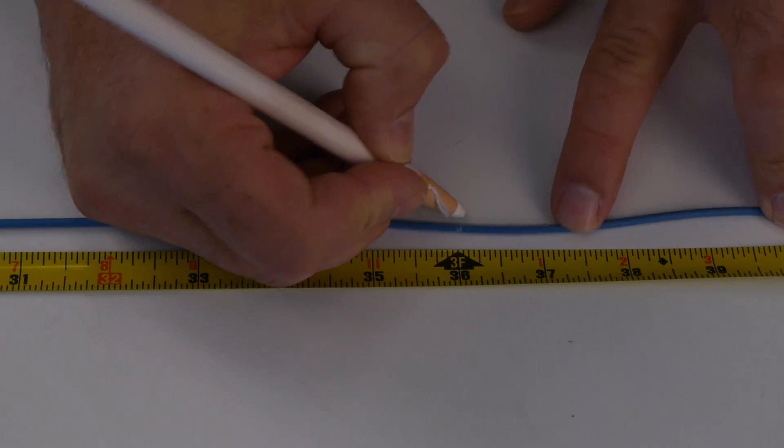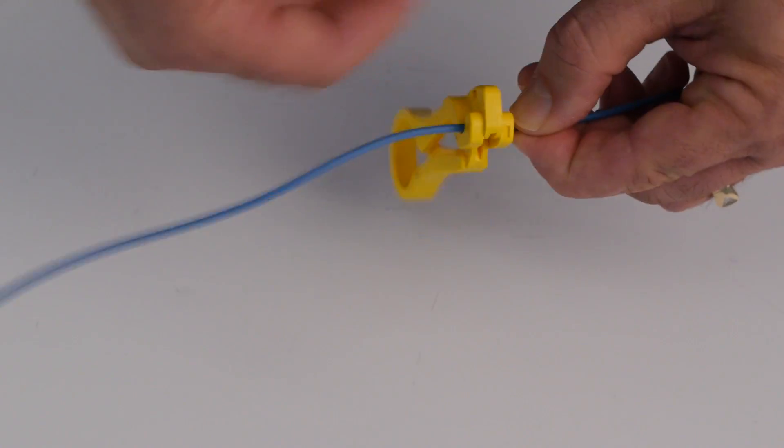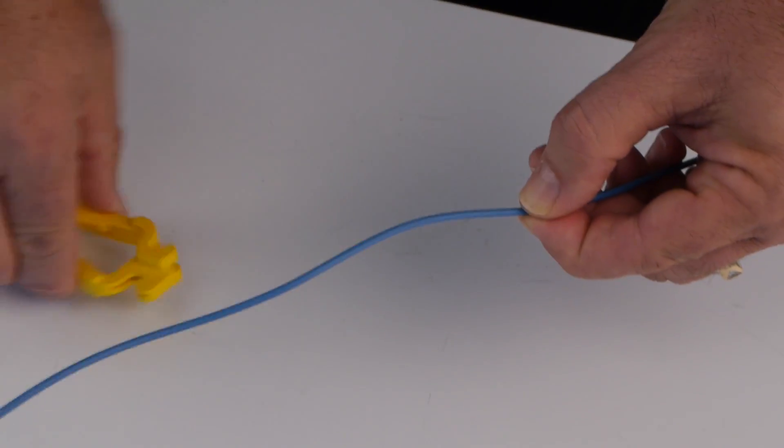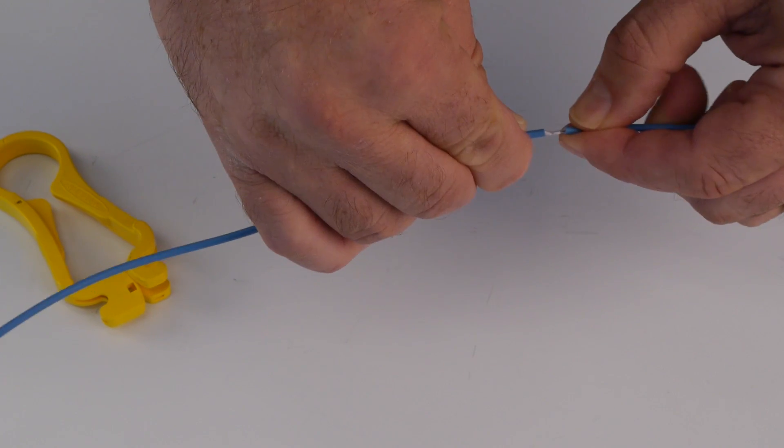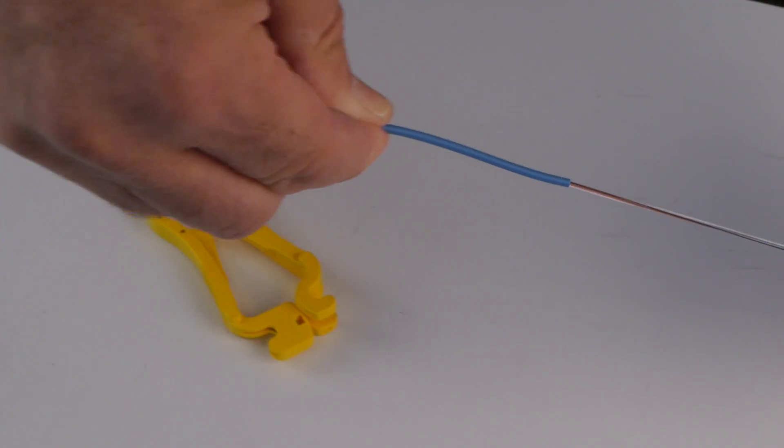To break out fibers from the buffer tubes, ring score a tube approximately 36 inches for fiber splicing and tray storage. Gently flex the tube at the score location to complete the opening of the tube. Pull the free tubing off to expose the fibers.